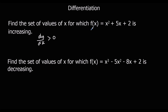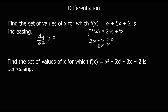So if I differentiate the function — using this notation, which means exactly the same as dy/dx — the gradient function is found by multiplying by the power and taking one off the power. So that's going to be 2x plus 5. The gradient function is 2x plus 5, and I need to know where it's increasing — where it's positive. So 2x plus 5 is bigger than zero. Solving: minus 5 from both sides and divide by 2. So the set of values of x for which the function is increasing is x is bigger than minus 5 over 2, or minus 2.5.